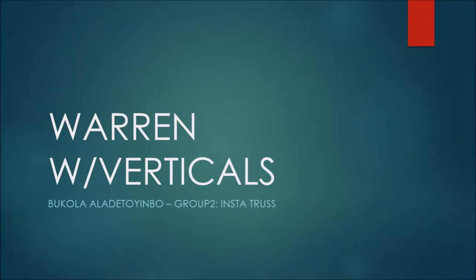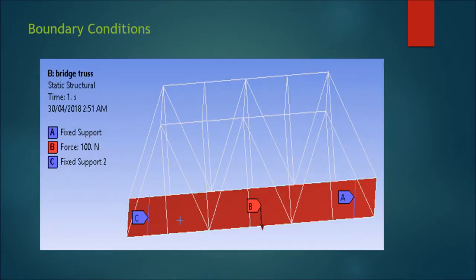Hi, my name is Bukola and my design bridge truss is Warren truss with verticals. For my boundary conditions, I have set a fixed support at both sides of the bridge and a force of 100 Newtons is applied at the center because in reality the bridge would be supported at both sides and a load of 10 kg would be applied on the roadbed.